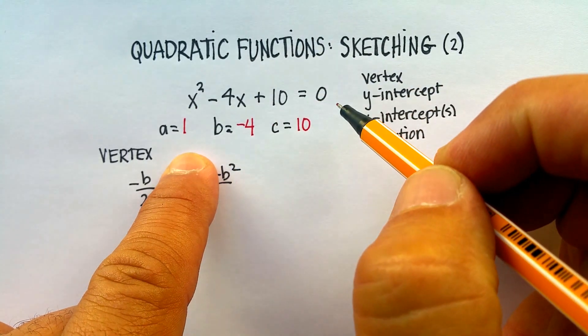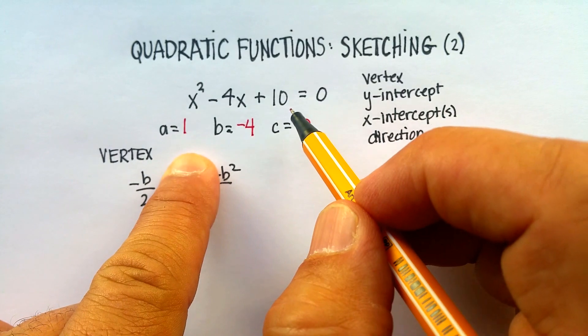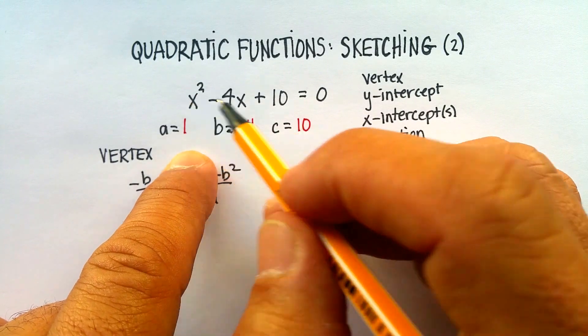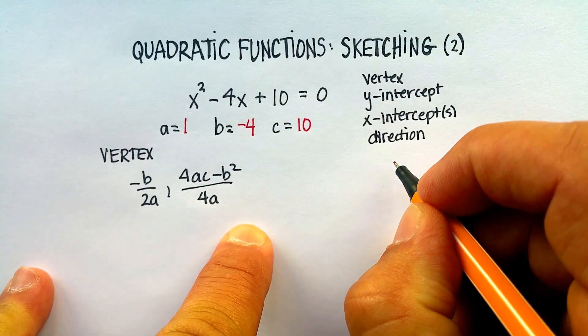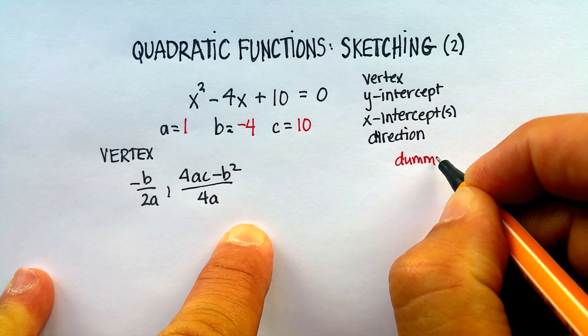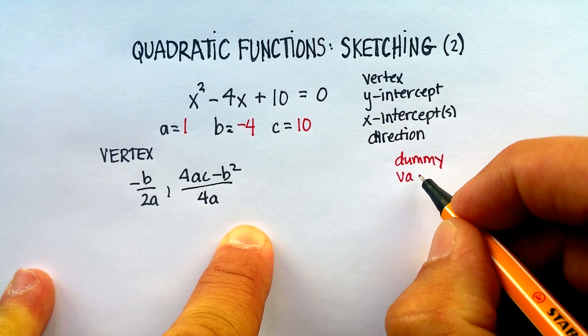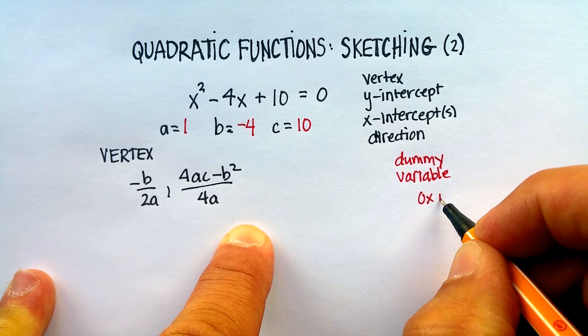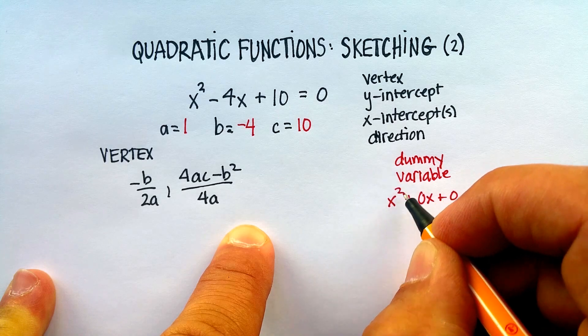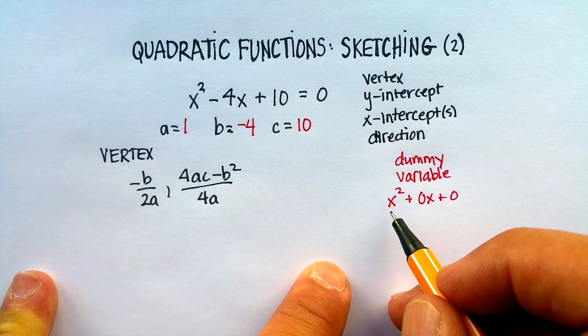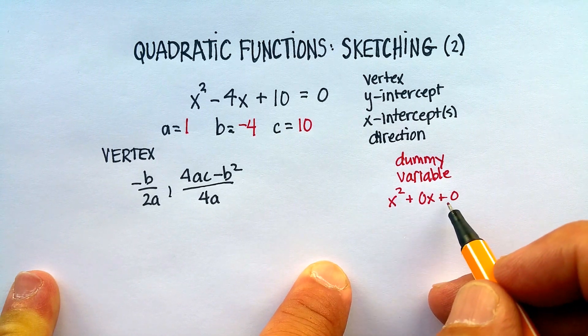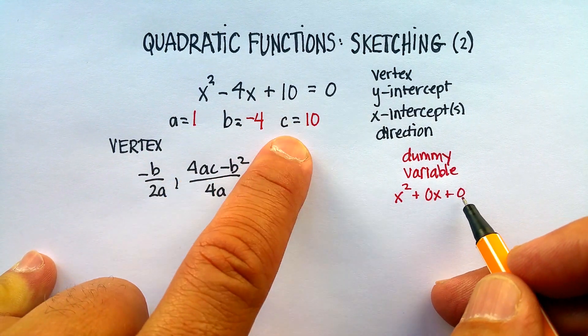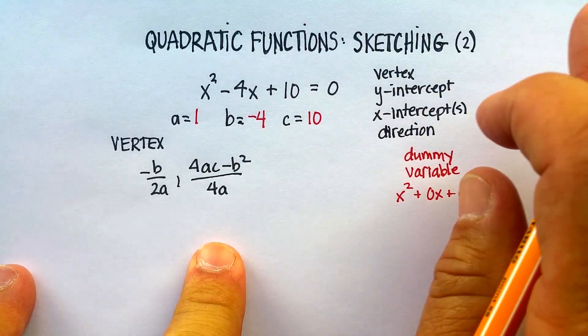If you don't have all these terms, you have to have the quadratic term, but if you don't have the other two, just put in what they call a dummy variable. A dummy variable just means you put in a 0 in front of the variable. So like x squared plus 0x plus 0. Your a would be 1, but your b would be 0, and your c would be 0. That's just a quick aside.